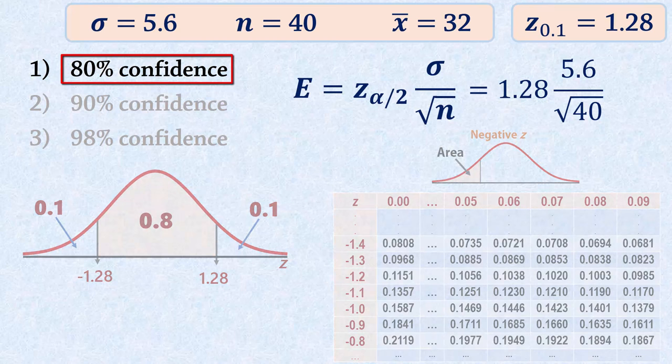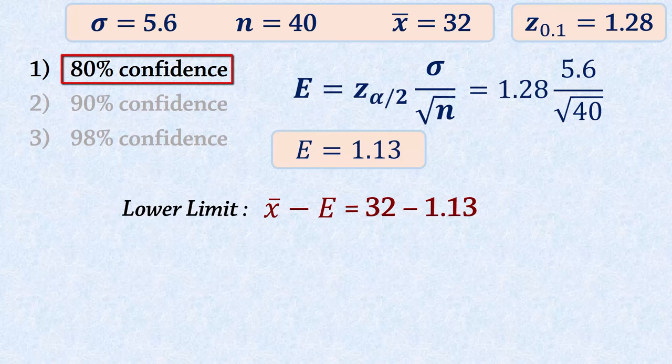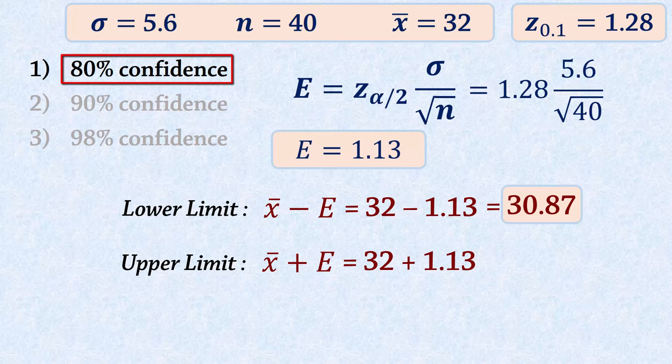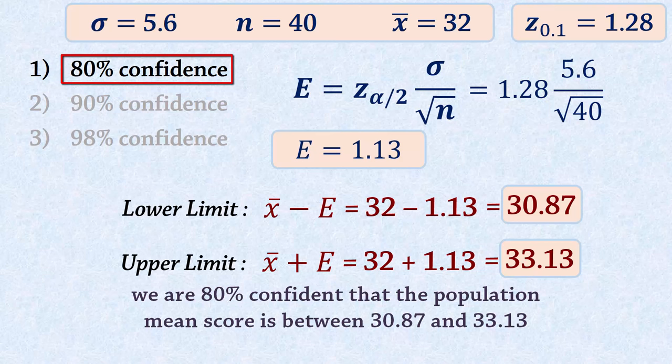The margin of error is therefore 1.13. So the lower limit of the confidence interval is 32 minus 1.13, which gives 30.87. And the upper limit is 32 plus 1.13, which gives 33.13. To interpret that, we say we are 80% confident that the population mean score is between 30.87 and 33.13.